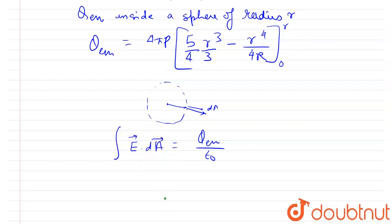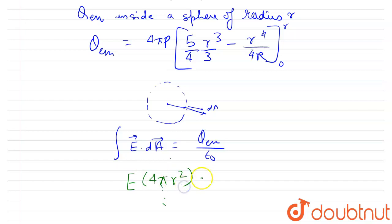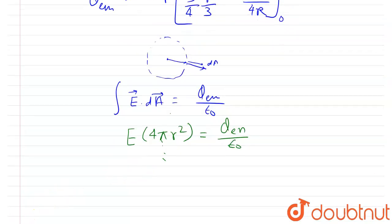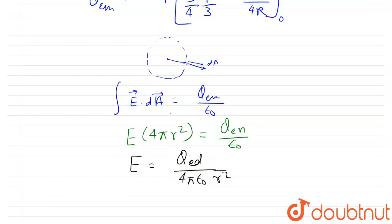Since the angle between the area vector and E is zero, E · dA = E × 4πr². So Gauss's law gives E × 4πr² = Q_enclosed / ε₀, which simplifies to E = Q_enclosed / (4πε₀r²).